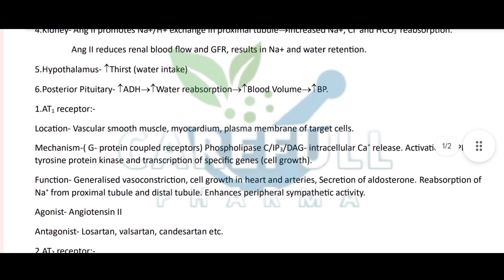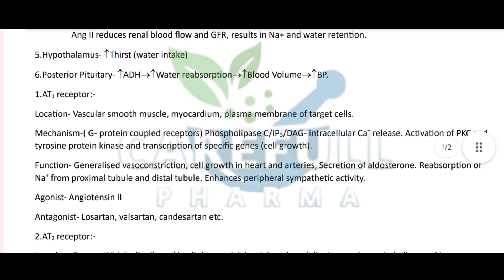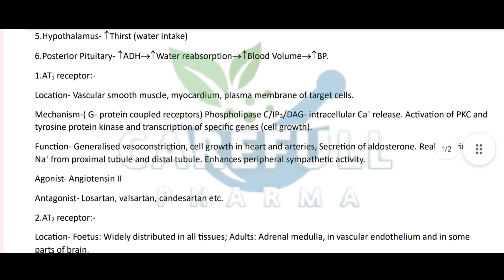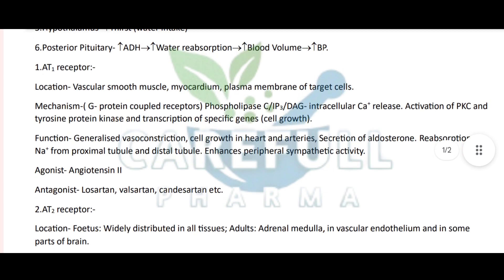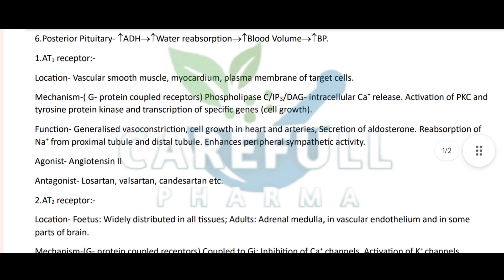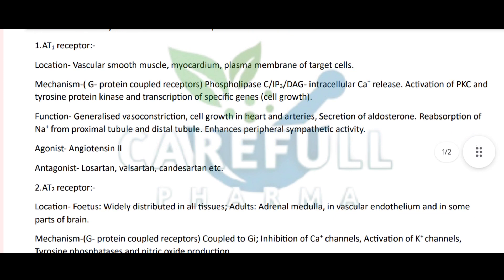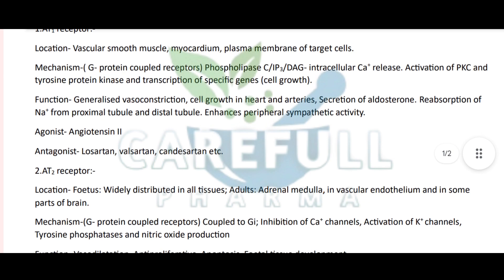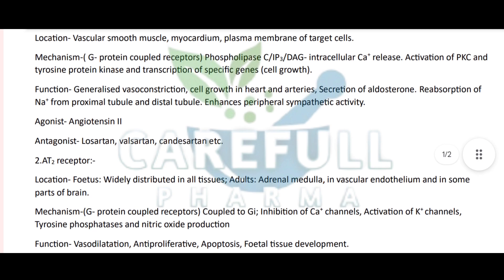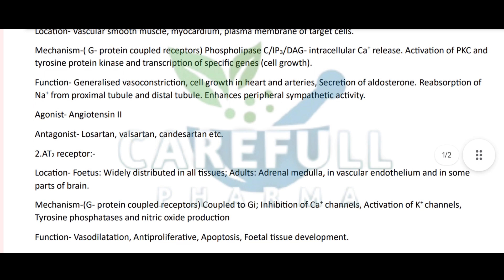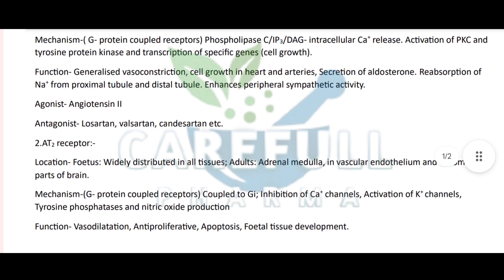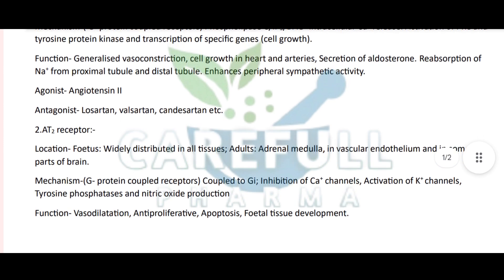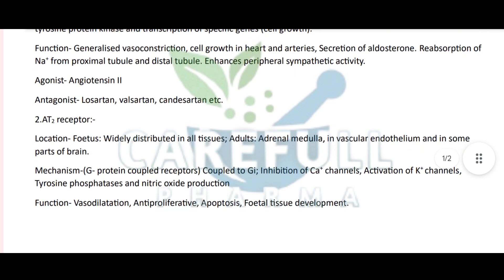AT1 Receptor: Location - Vascular Smooth Muscle, Myocardium, Plasma Membrane of Target Cells. Mechanism - G-Protein Coupled Receptors, coupled to phospholipase C / IP3 / DAG, intracellular Ca2+ release, activation of PKC and Tyrosine Protein Kinase, and transcription of specific genes leading to cell growth. Function - Generalized Vasoconstriction, Cell Growth in Heart and Arteries, Secretion of Aldosterone, Reabsorption of Na+ from Proximal and Distal Tubule, and Enhancement of Peripheral Sympathetic Activity. Agonist: Angiotensin II.